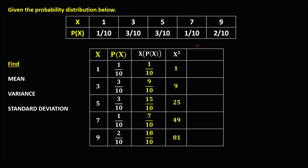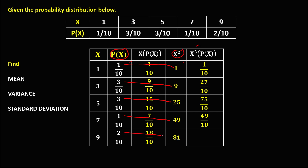For this column, we have x squared times p(x), so we multiply the x squared column and the p(x) column. Again, multiply the whole number to the numerator. So 1 times 1 is 1 over 10, 3 times 9 is 27 over 10, 3 times 25 is 75 over 10, 1 times 49 is 49 over 10, and 2 times 81 is 162 over 10.